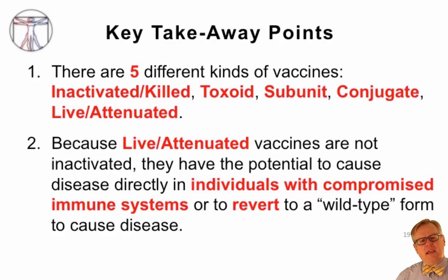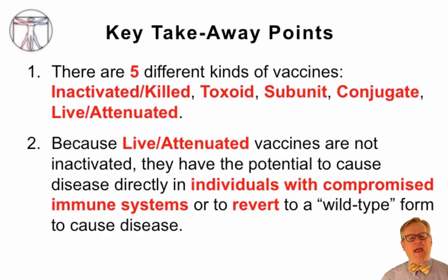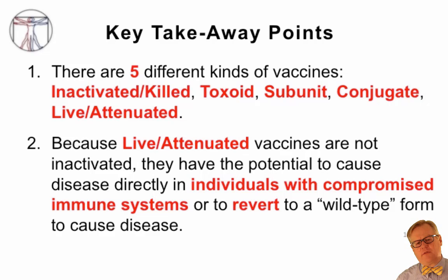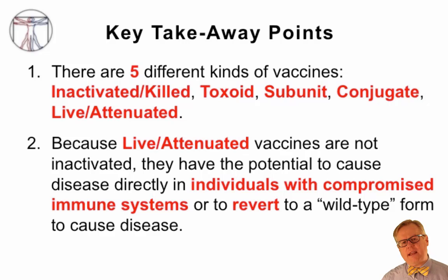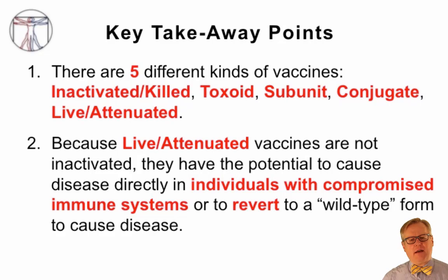The key takeaway points from this video are that there are five different kinds of vaccines: inactivated or killed vaccines, toxoid vaccines, subunit vaccines, conjugate vaccines, and live attenuated vaccines. Because live attenuated vaccines contain live organisms, they have the potential to cause disease directly in immunocompromised individuals, or in some cases to revert to a wild-type pathogen that can cause disease.